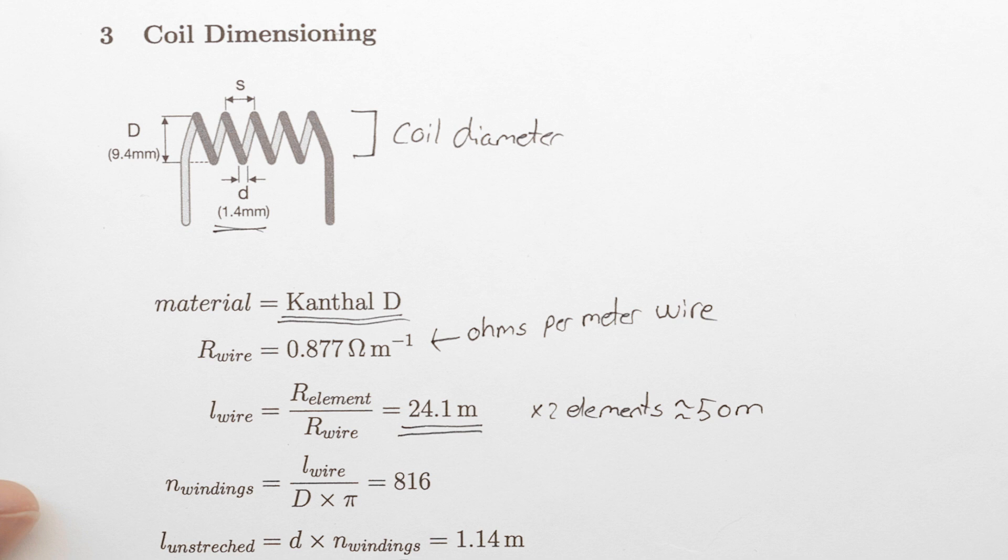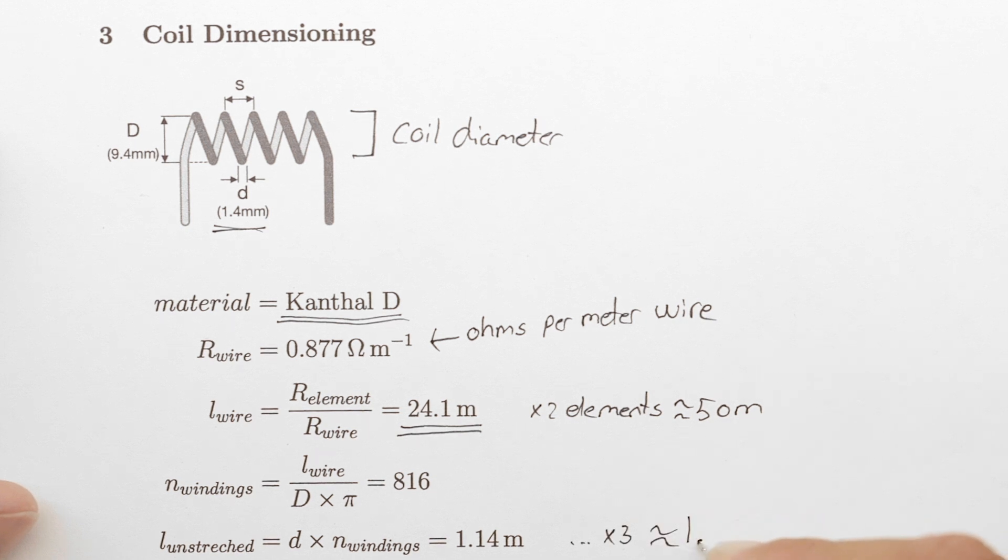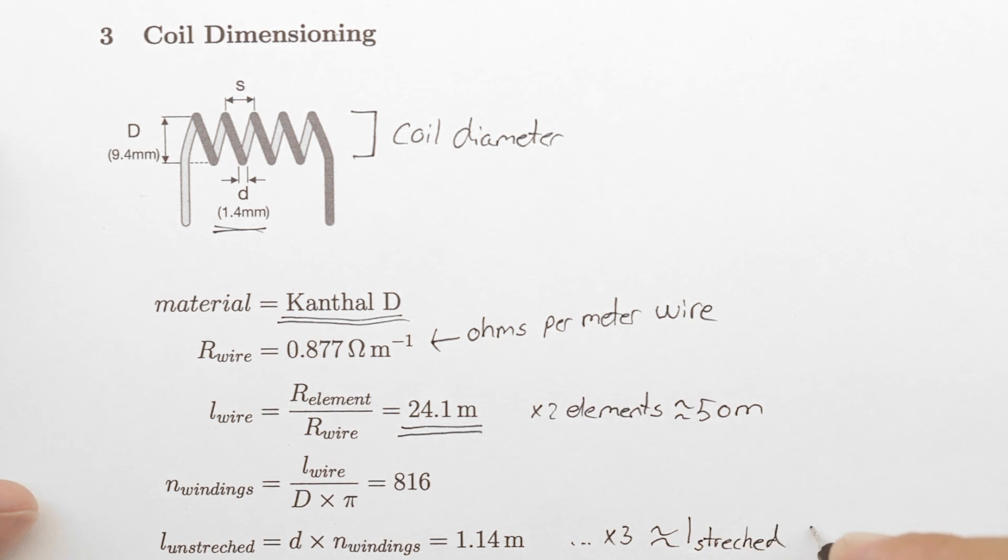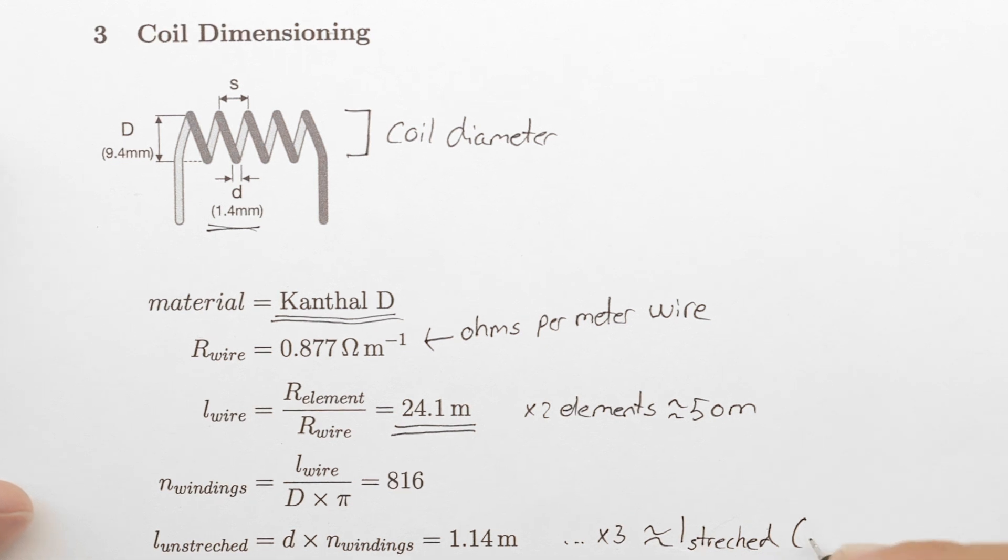According to the kanthal wire datasheet, the coil should be stretched two to three times, getting us pretty close to the desired 3.3 meter heating element. As I mentioned earlier, you might need to adjust some of your parameters or chosen wire to reach a suitable element size.